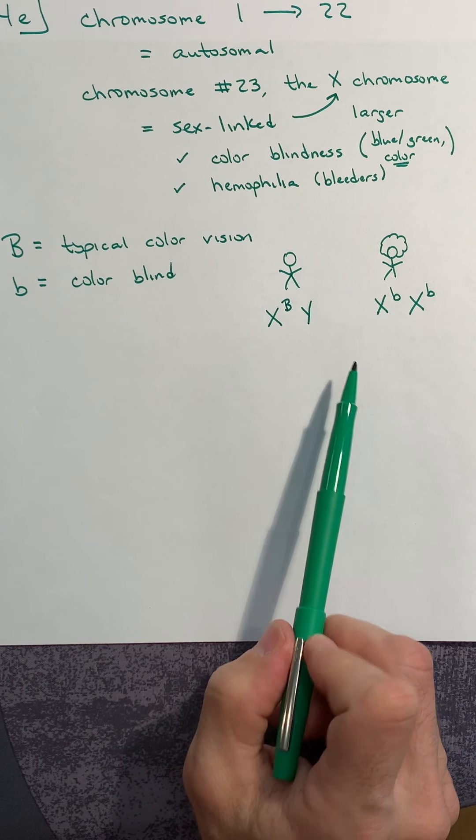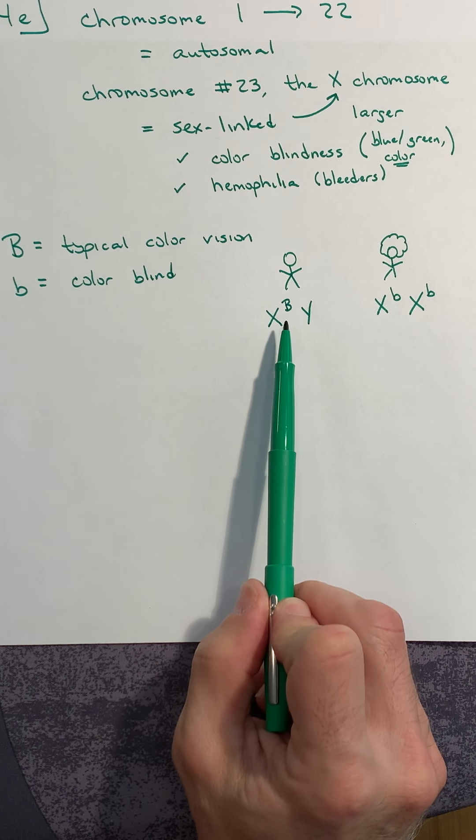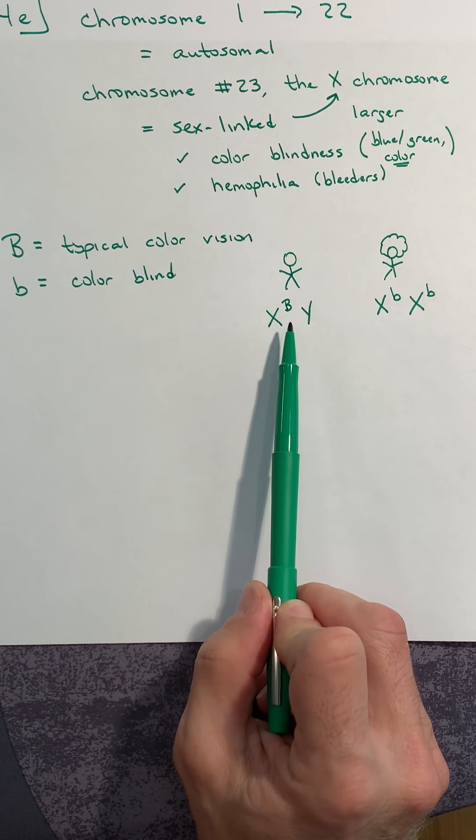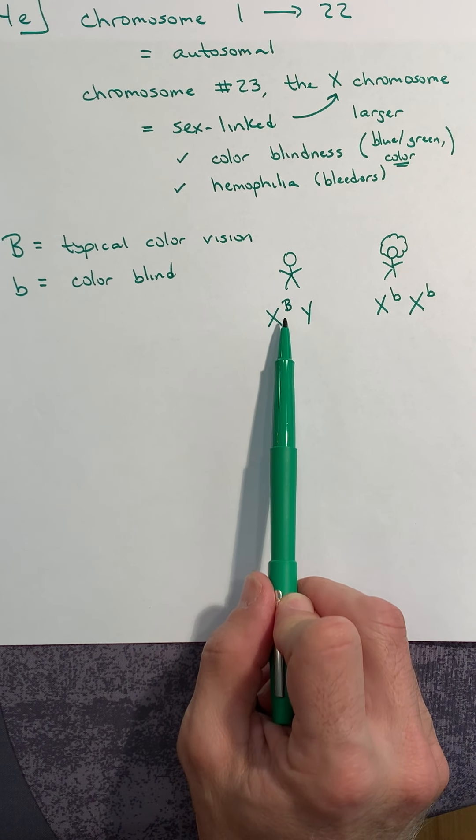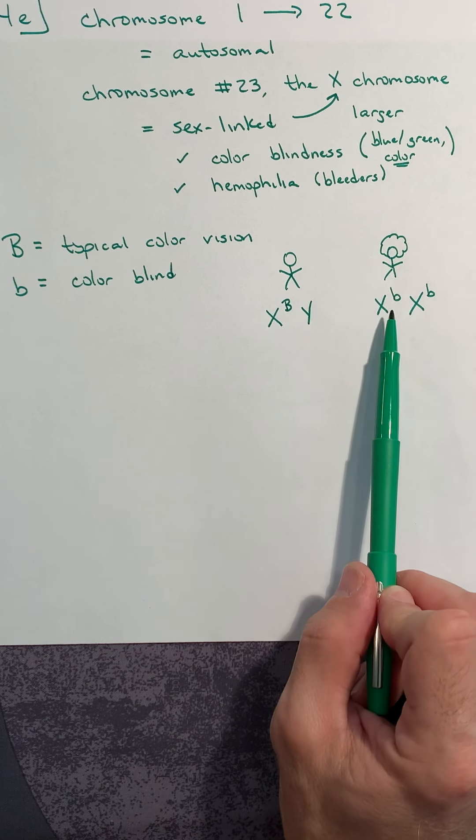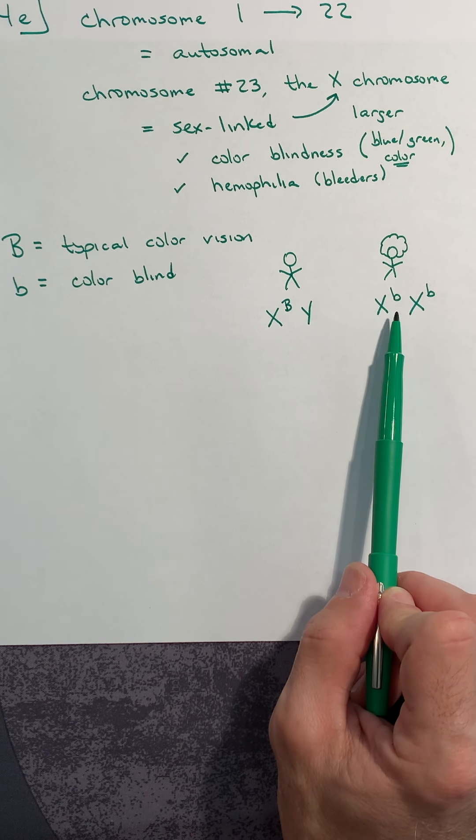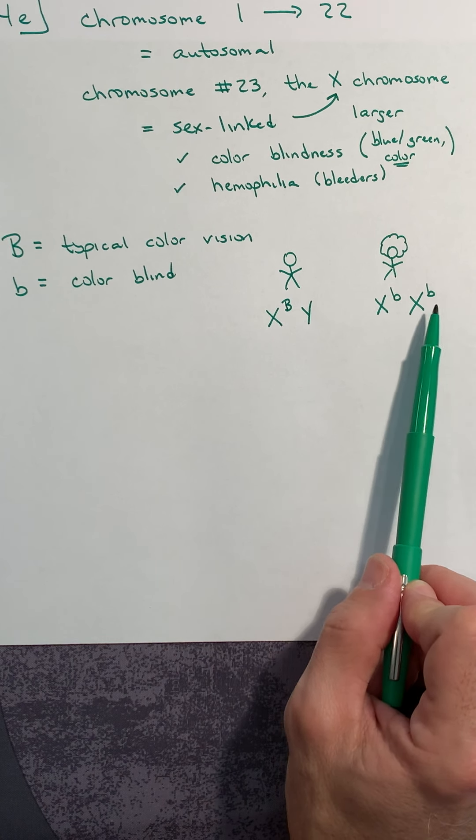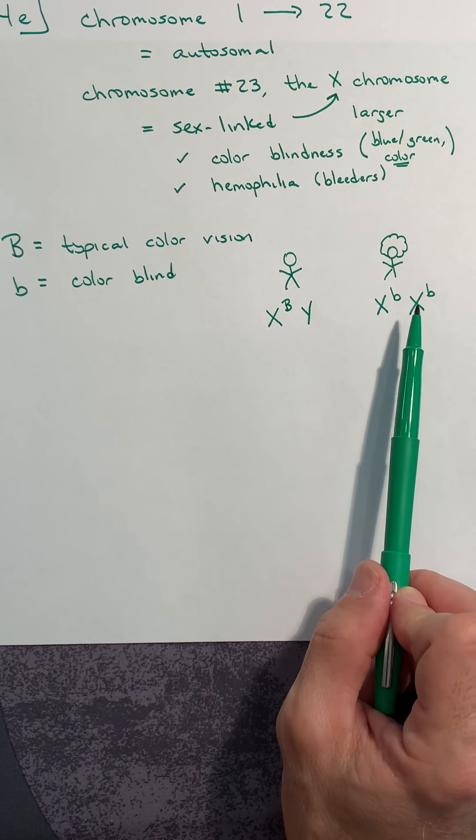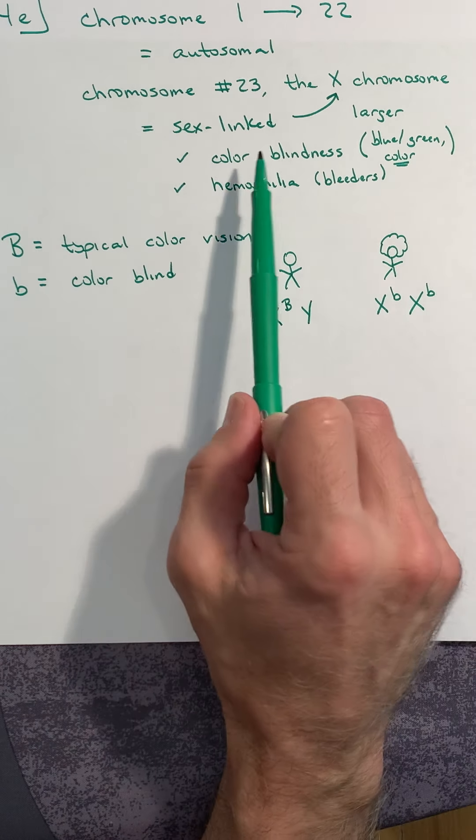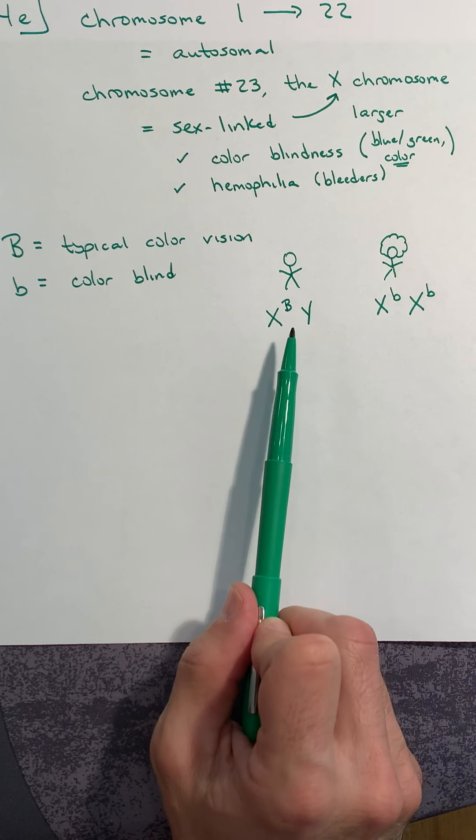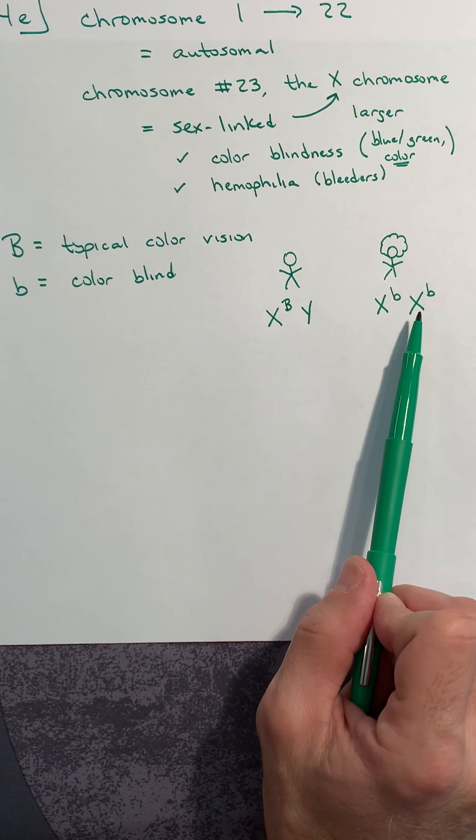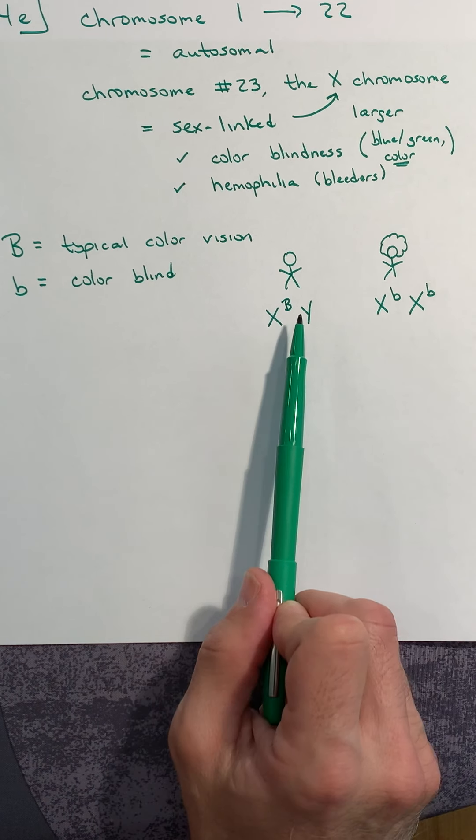Let's make the female colorblind and the male typical vision. Notice in sex-linked traits, the male only gets one copy of the allele, so it only takes one recessive b to make the male colorblind. Females have a huge advantage here—since females have two X chromosomes, they have to receive two copies of the recessive allele to express it. That's why color blindness and hemophilia are ten times more common in males than females.